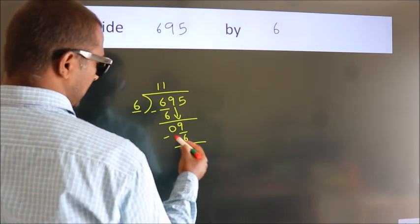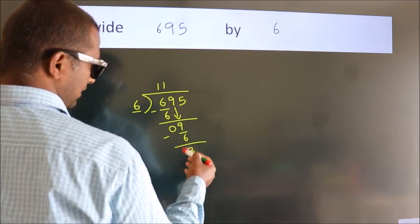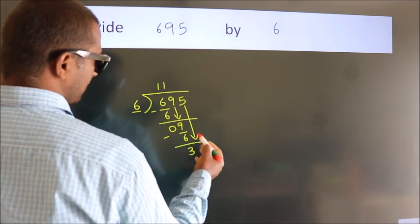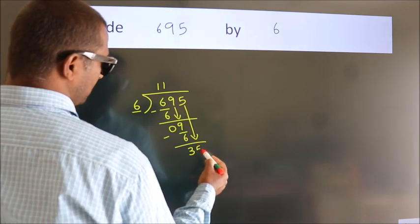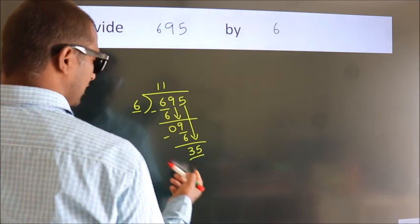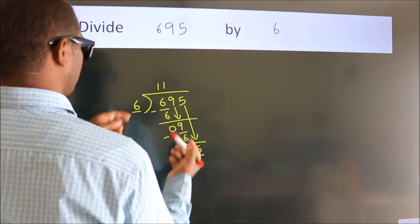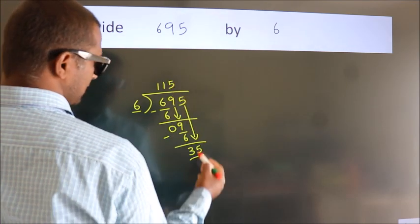Now we subtract, we get 3. After this, bring down the beside number. So 5 down, so 35. A number close to 35 in 6 table is 6 fives, 30.